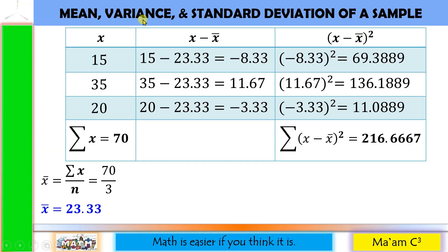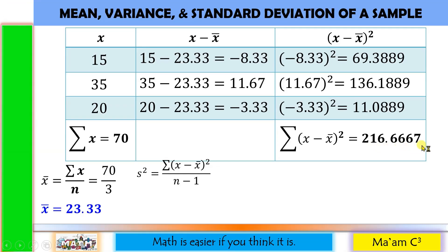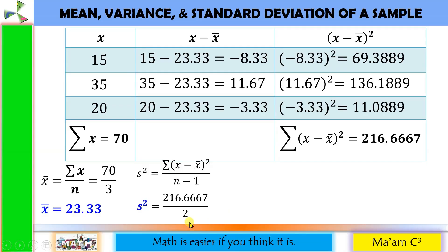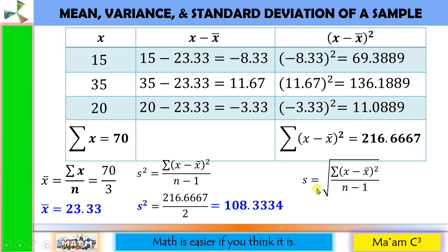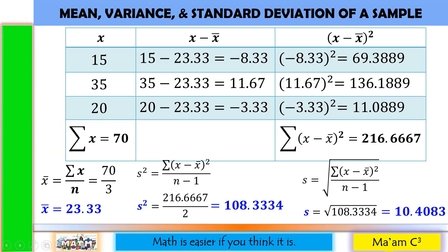Now we can solve for the sample variance using s squared. Notice that in the denominator, instead of n, we use n minus 1. So we have 216.6667 divided by n minus 1, which is 3 minus 1 equals 2. This gives us 108.3334. Finally, the sample standard deviation s is the square root of the variance. The square root of 108.3334 is 10.4083.